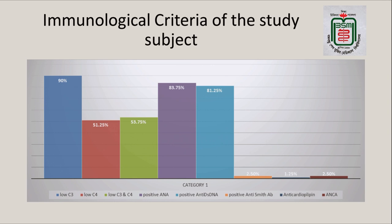These are the immunological criteria of our study subjects. Low complementemia was the predominant finding, as we are dealing with only renal patients. Low C3 and C4 were both present in 53%, anti-nuclear antibody was positive in 83%, and anti-double-stranded DNA in 81%. Though nowadays the entry criterion is ANA positivity, we have not found 100% ANA positivity — most probably there may be some methodological or dilution error.